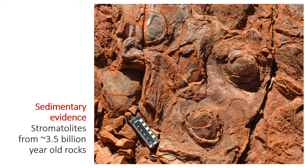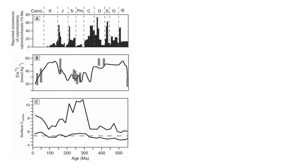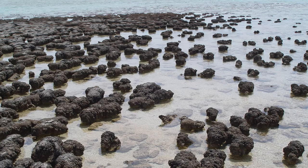Some of the oldest evidence of life on Earth comes from a very unusual form of sedimentary structure known as a stromatolite. Stromatolites in the Archean provide evidence of early life, but stromatolites occur throughout the geologic record too, and they still exist today even if they are relatively uncommon and limited to a narrow range of environments.